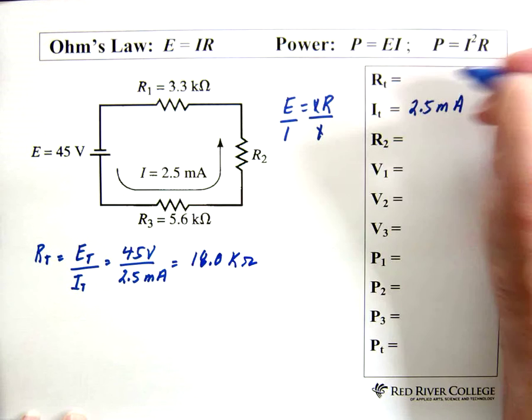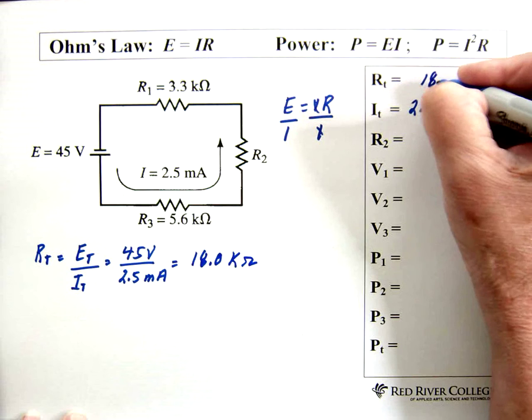So we end up with 18.0 kilohms. That's our total resistance here, alright? 18.0 kilohms.